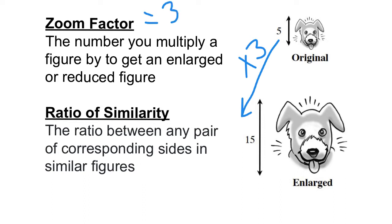If we wanted to do a ratio of similarity, it's just a ratio between any pair of corresponding sides in similar figures. Since it's a ratio, we're gonna write our answer as a fraction.